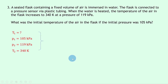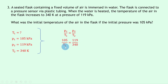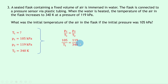Writing down our equation for Gay-Lussac's law: P1 over T1 equals P2 over T2. Substituting in gives us 105 divided by T1 equals 119 over 340. Note that the pressures are kept in kilopascals since the units will cancel out anyway. Cross multiplying gives 119 T1 equals 105 times 340. Doing the right-hand side in your calculator and dividing by 119 gives us T1 equals 300 Kelvin.